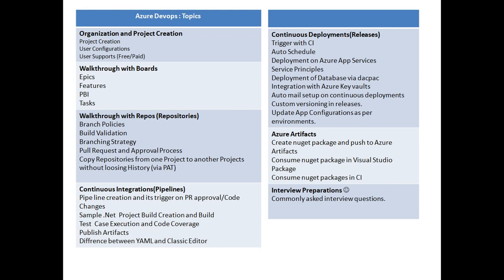Then I will cover Continuous Integration, where we will see how to build code automatically rather than just locally. I will create a sample .NET project and show how to automate builds, automate test case execution, get code coverage within the pipeline itself, and publish build artifacts — meaning storing the build DLLs at a location so they can be picked up in Continuous Deployment.